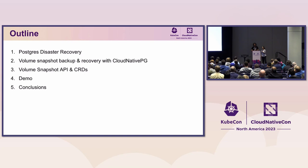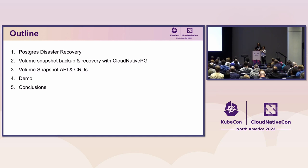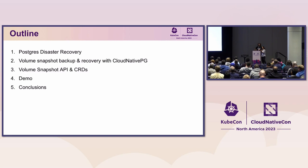We'll first start off with a background in Postgres technologies on how Postgres does backup and recovery. We're going to talk about the new volume snapshot backup and recovery feature with the Cloud Native PG operator, dive into details on the actual APIs and how you use it, show a demo, and then wrap that up afterwards.